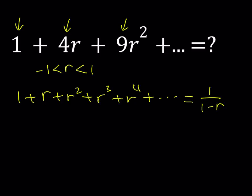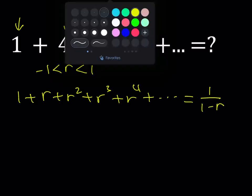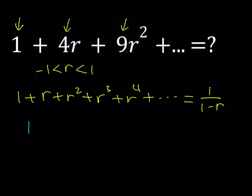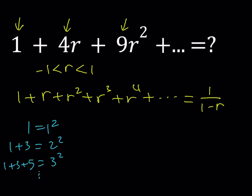So how do I manipulate this expression to get what we need? We're going to manipulate the left hand side, which will then match the right hand side. We have perfect square coefficients. How do you get perfect squares from sums? If you add odd numbers you get perfect squares. For example, 1 by itself is 1 squared; 1 plus 3 gives 2 squared; 1 plus 3 plus 5 gives 3 squared, and so on.